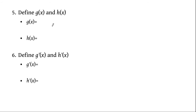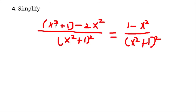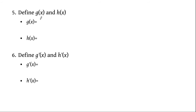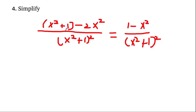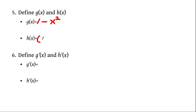Now we're going to differentiate once again to find the second derivative. We define a new g(x) as the top factor, which is 1−x², and h(x) is (x²+1) whole squared. Then g'(x) is −2x.